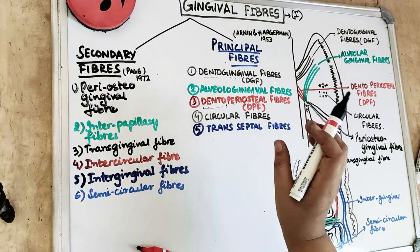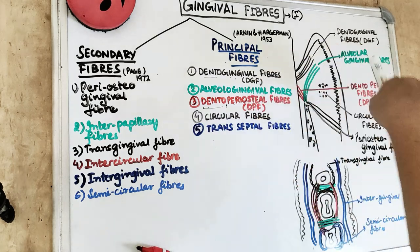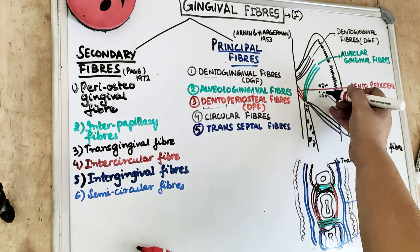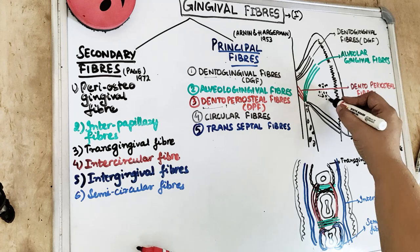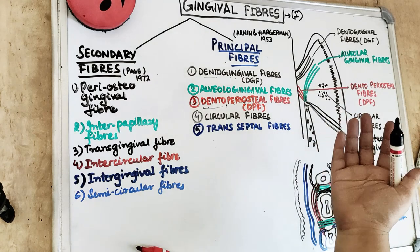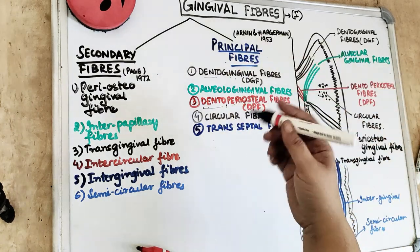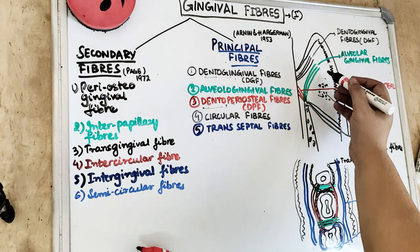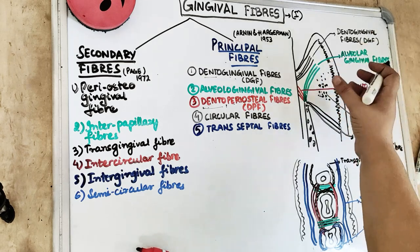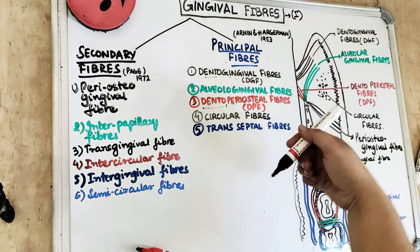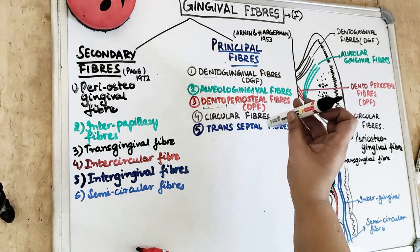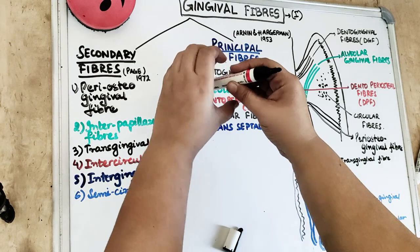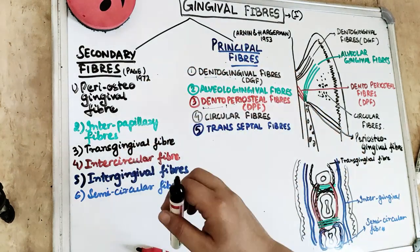The fourth fiber is the circular fiber. These fibers encircle the tooth — running through the free gingival margin in a ring-like pattern. We cannot show them in a side cross-section. These fibers maintain the position of the free gingival margin and hold it against the tooth. If this is the tooth, the circular fibers encircle it like a ring.